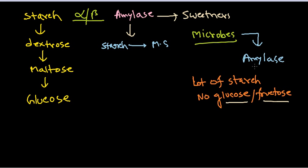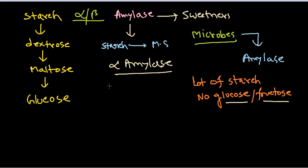Once microbes start producing those starch-breaking enzymes, we harvest them. To produce alpha amylase, we grow microbes in the presence of starchy material without glucose or fructose. The substrate used is approximately 5% starch, along with several salts such as ammonium nitrate (0.5%) and sodium citrate (0.3%).